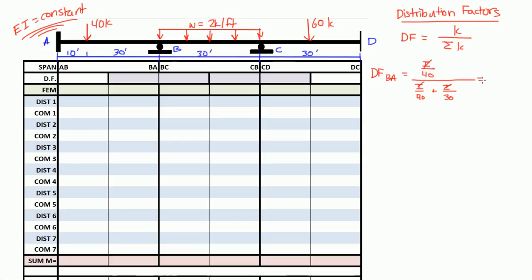And our I's actually cancel out because EI is constant. And we end up getting 1 over 40 divided by 1 over 40 plus 1 over 30. And if we solve that out, our distribution factor for BA is 0.429. So I'm going to write that distribution factor here, 0.429.